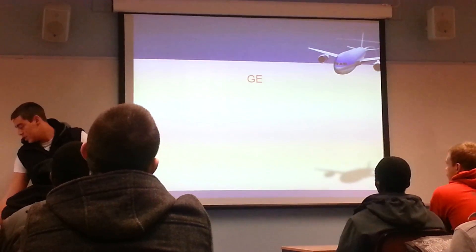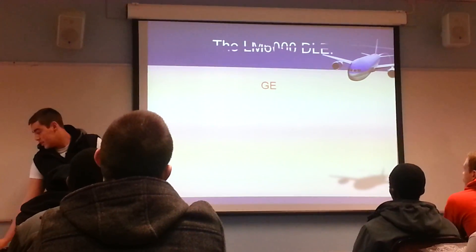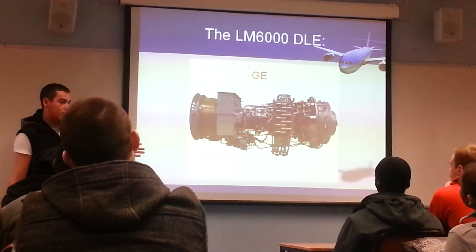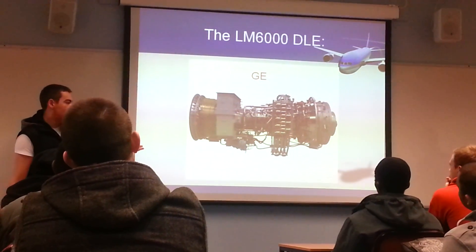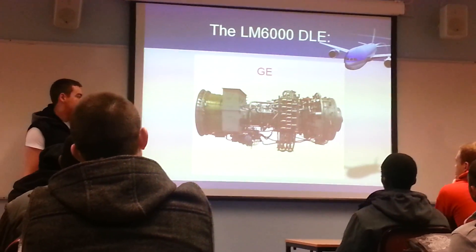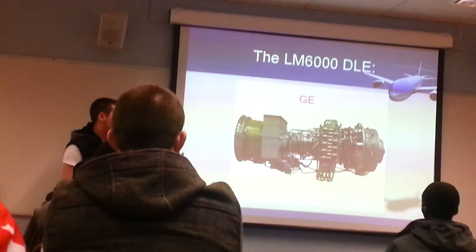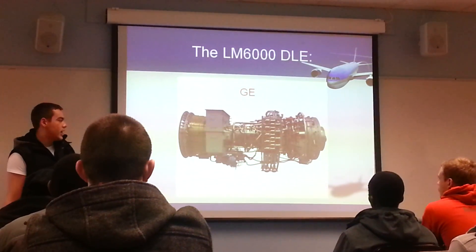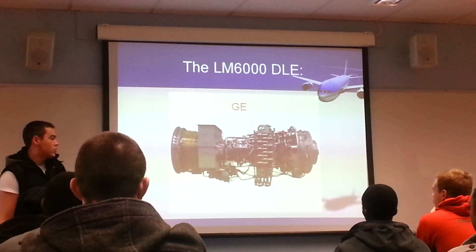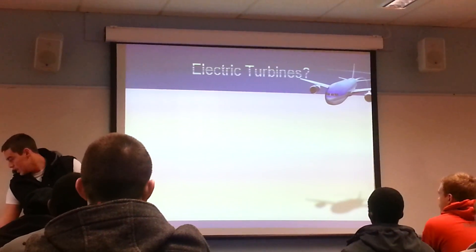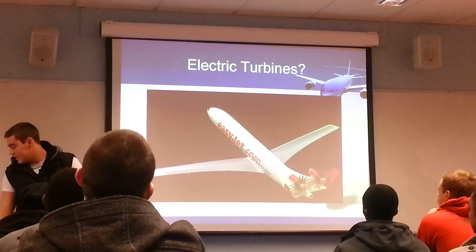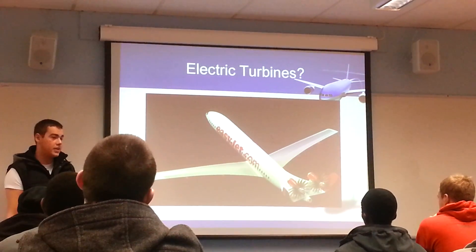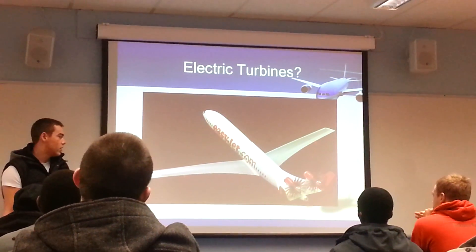In terms of future prototypes, GE's LM6000 is currently a ground-use turbine engine used to power cities, running on natural gas with zero emissions. It is too large for aircraft, but an aircraft version is being considered for 2025. Another prototype is the electric turbine, developed in partnership with EasyJet. It has already been created but cannot be used yet because batteries large enough to hold the required power do not currently exist.